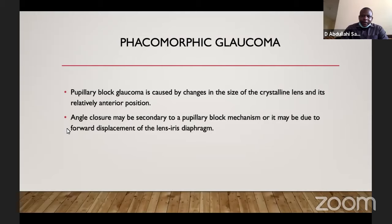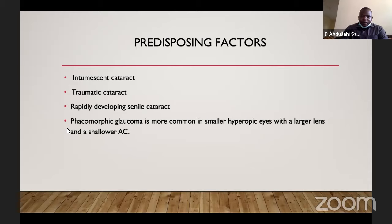Phacomorphic glaucoma is another form of lens-induced glaucoma. What happens is that the lens becomes swollen, leading to an increase in the iris-lens diaphragm, which causes pupillary block as a result of the change in lens size. The angle closure may be due to pupillary block, or due to forward displacement of the iris-lens diaphragm — the enlarging lens pushes the peripheral iris and covers the trabecular meshwork. Risk factors include patients with intumescent cataract, traumatic cataract, rapidly developing senile cataracts, and hyperopes with small eyes, large lens, and shallow anterior chamber.